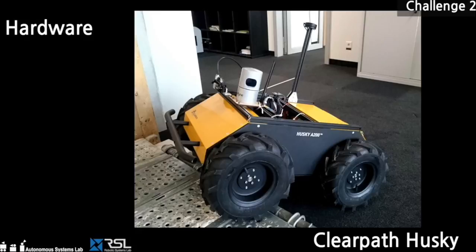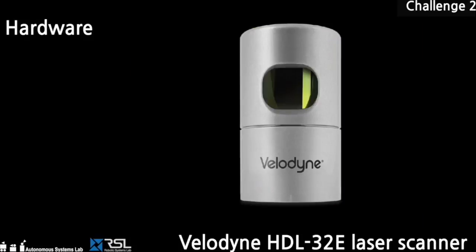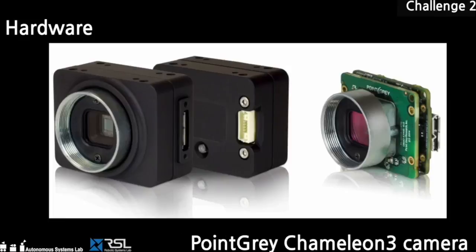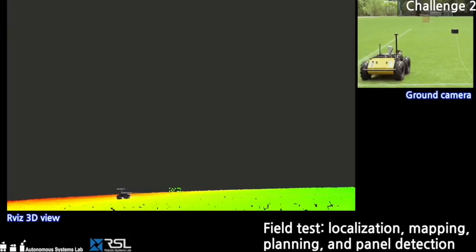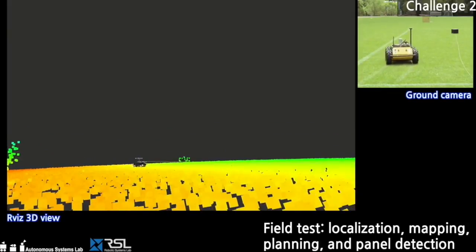The hardware employed in Challenge 2 consists of a ClearPath Husky ground vehicle, a 3D laser scanner, an RGB camera, and custom-made robot arm. Field tests and simulations are carried out to validate the proposed approach.